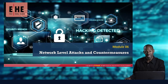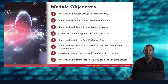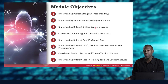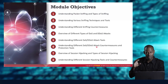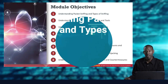Welcome to Ethical Hacking Essentials. We are in Module 6. We're going to have a look at network level attacks and countermeasures. We're going to start with understanding packet sniffing, types of sniffing, various sniffing techniques and tools, and sniffing countermeasures — because you want to make sure you can sniff networks but also prevent attackers from sniffing yours. We're also going to look at denial of service and distributed denial of service attacks, tools, and countermeasures, and then session hijacking and session hijacking tools and countermeasures.